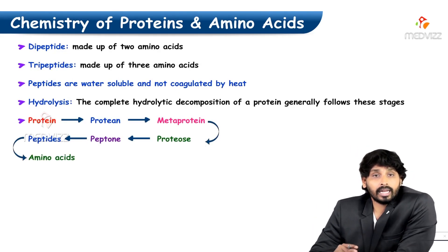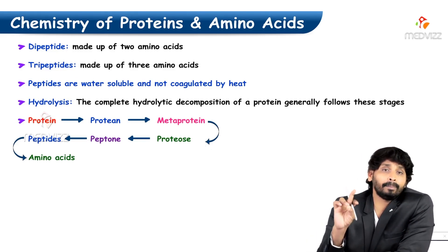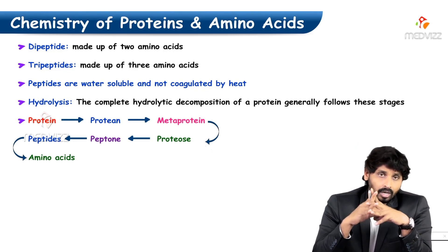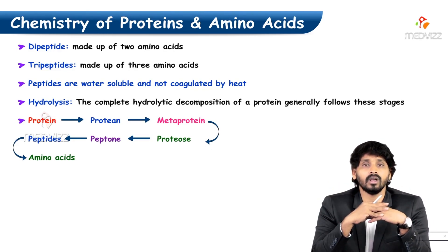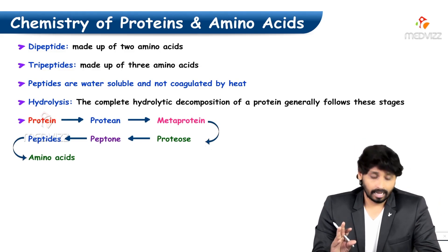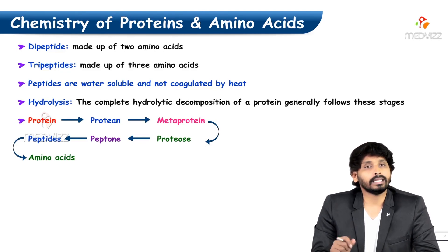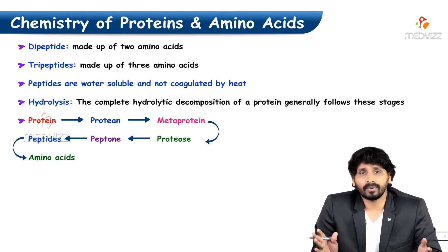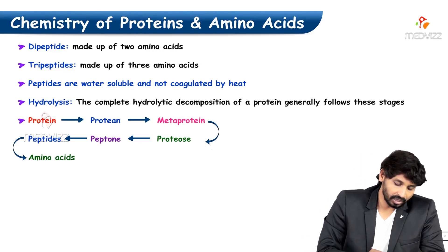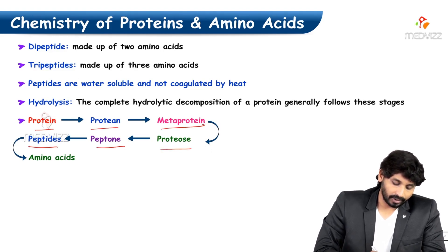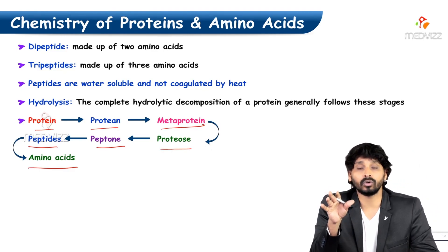Biologically important peptides: a dipeptide consists of two amino acids joined by peptide linkage, a tripeptide consists of three amino acids. The naming is based on number of amino acids, not number of peptide bonds. All peptides are water soluble and not coagulated by heat. If you hydrolyze a peptide, it is further simplified into amino acids. The sequential degradation goes: protein → metaprotein → proteose → peptone → peptides → individual amino acids.